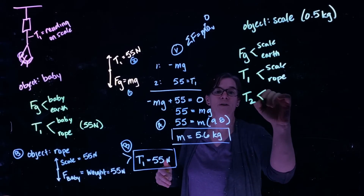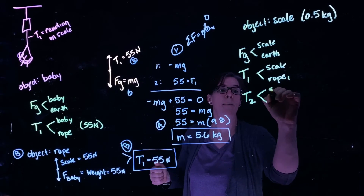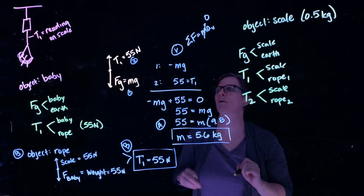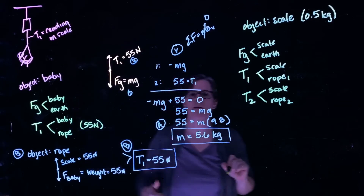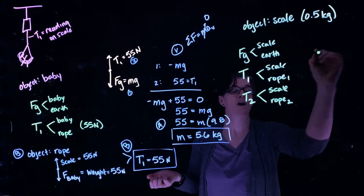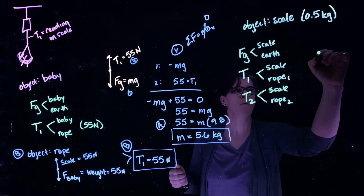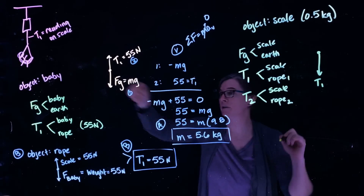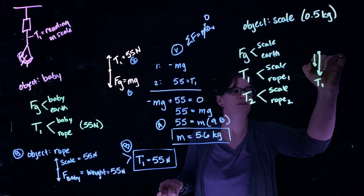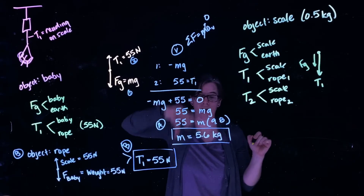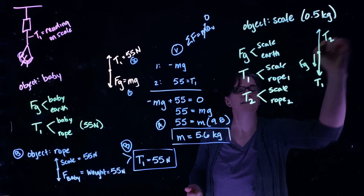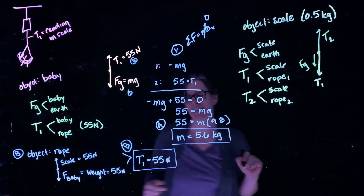The scale is also interacting with the rope above, so we have the scale and rope two, because it's touching that rope up top. Let's draw a free body diagram of the scale. We have T1 acting down, pulling down on that scale. We have the force of gravity of the scale also acting down. And then we have the tension T2 in the rope above acting up, holding it to the ceiling.